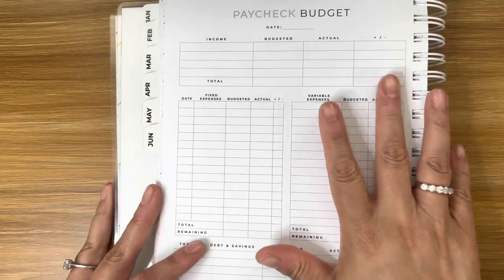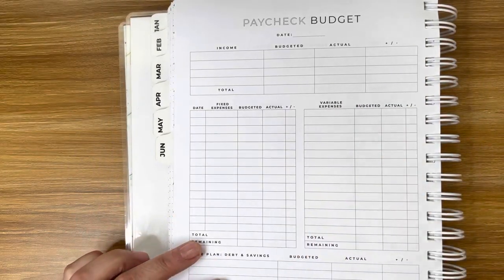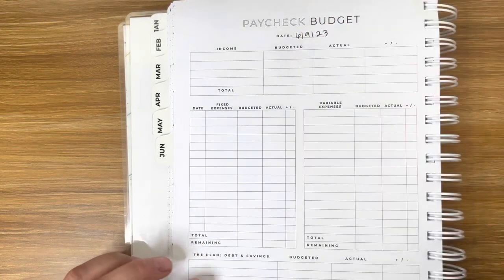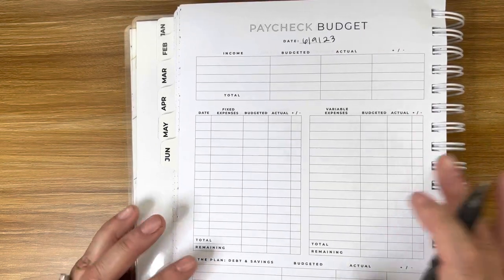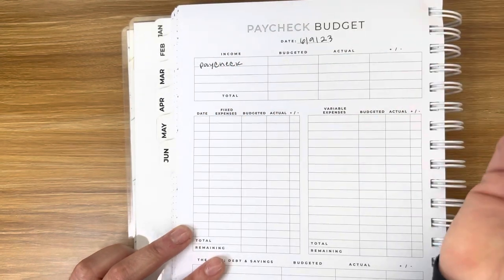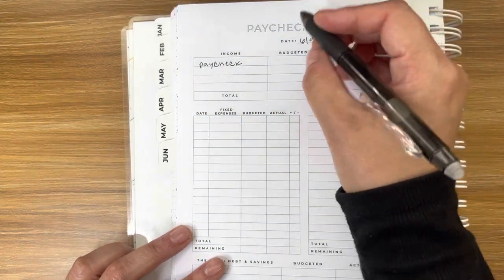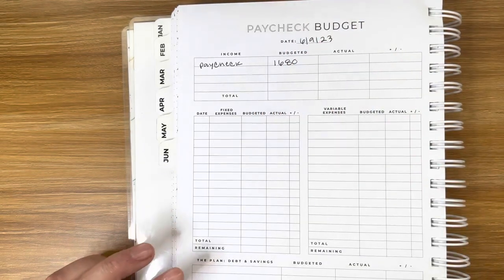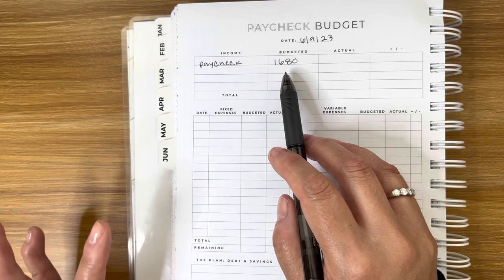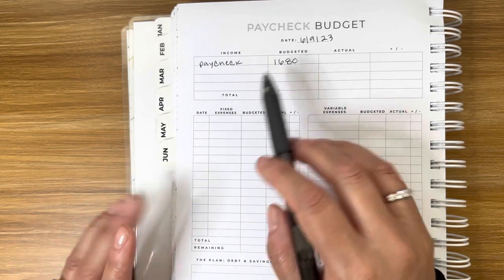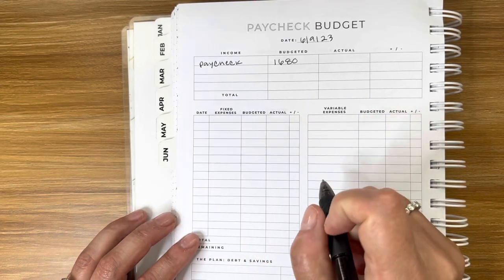For the paycheck budget, that was on June 9th. In the income section, we have my husband's paycheck. He is paid biweekly, and his check was $1,680. It's a little less because they didn't pay him five hours, so that's going to get adjusted for the next paycheck.